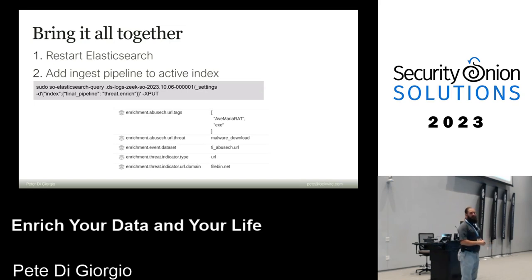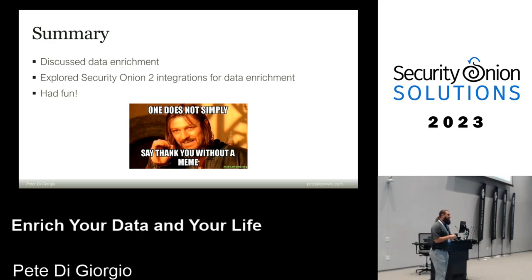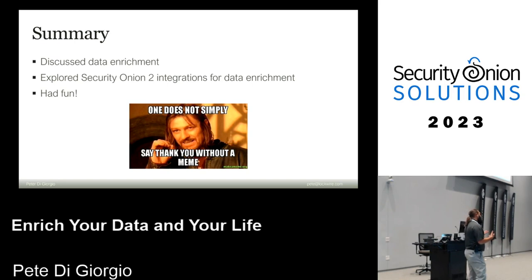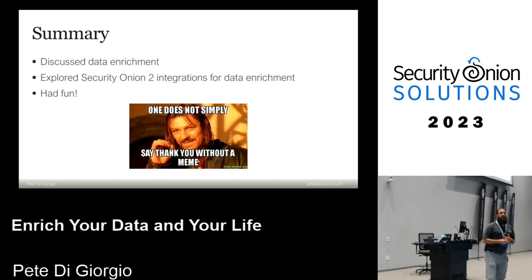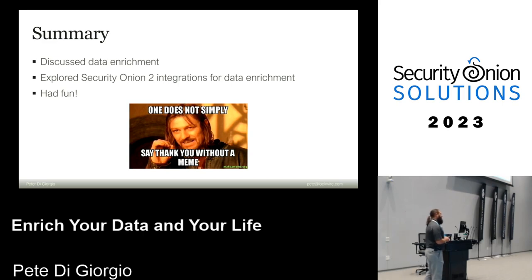The result: I get the URL tags, abuse.ch tells me which campaigns these are tied to, I see it's a malware download - that drives the decision for me, I don't feel great about that, I want to pay attention to it. I really just wanted to stimulate the idea that we can do this now - we can start to add context to the data we're bringing into Security Onion and use that context to drive decisions in our organizations.